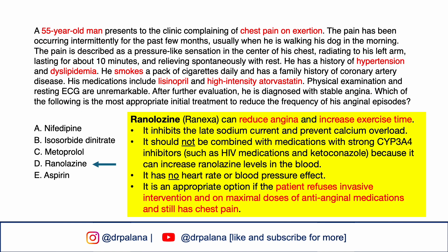Ranolazine can reduce angina and increase exercise time. It inhibits the late sodium current and prevents calcium overload. It should not be combined with strong CYP3A4 inhibitors such as HIV medications and ketoconazole, because it can increase ranolazine levels in the blood. This medication has no heart rate or blood pressure effect. It is an appropriate option if the patient refuses invasive intervention and is on maximal doses of anti-anginal medications and still has chest pains.